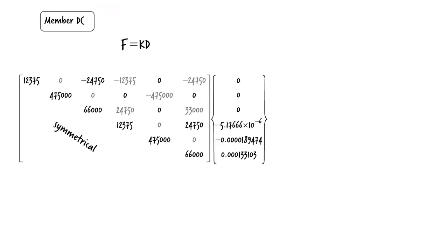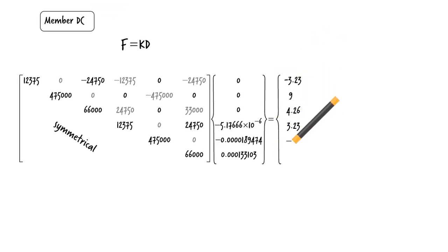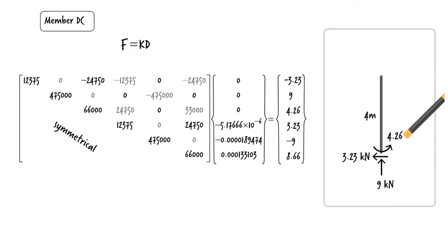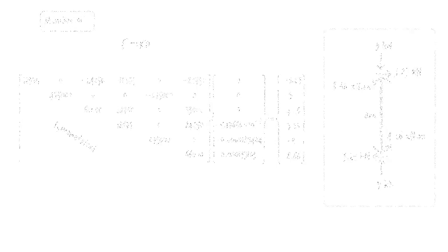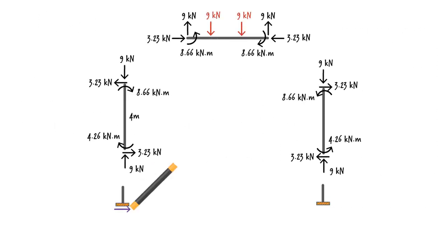For DC, since there are no member loads, the equation is written as F equals K times D. We know K and D, so F becomes the calculated values. Knowing the member end forces, we can easily determine the support reactions.